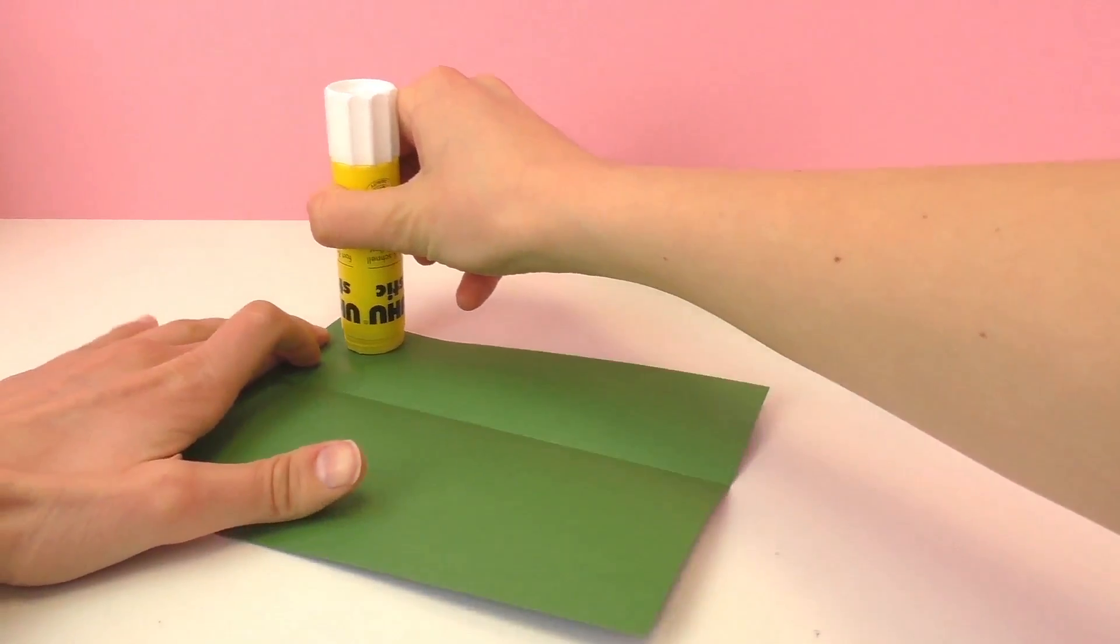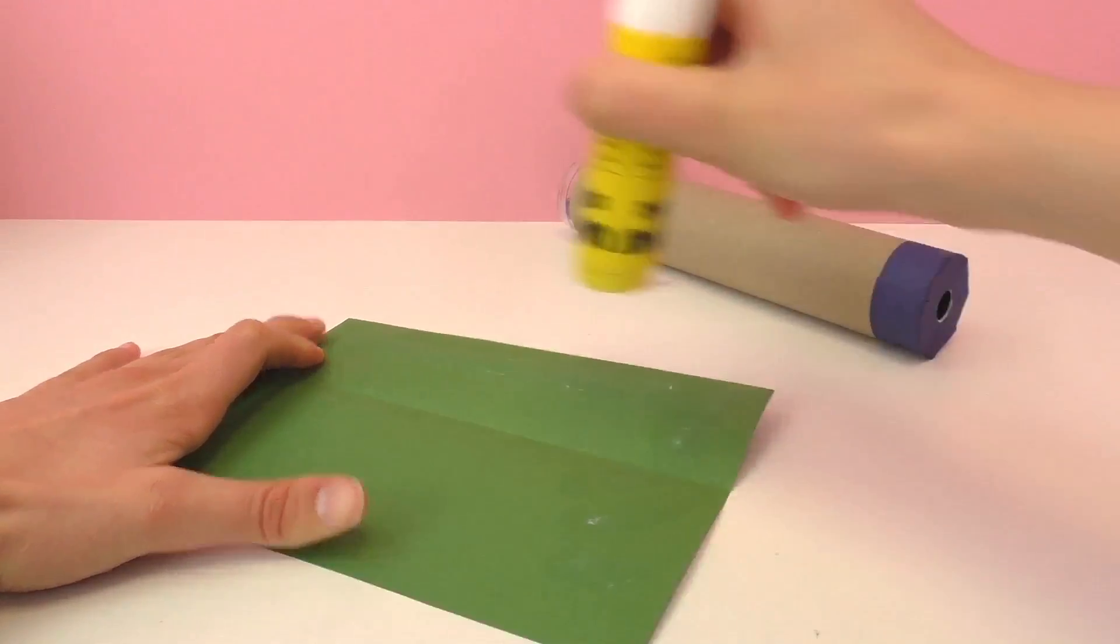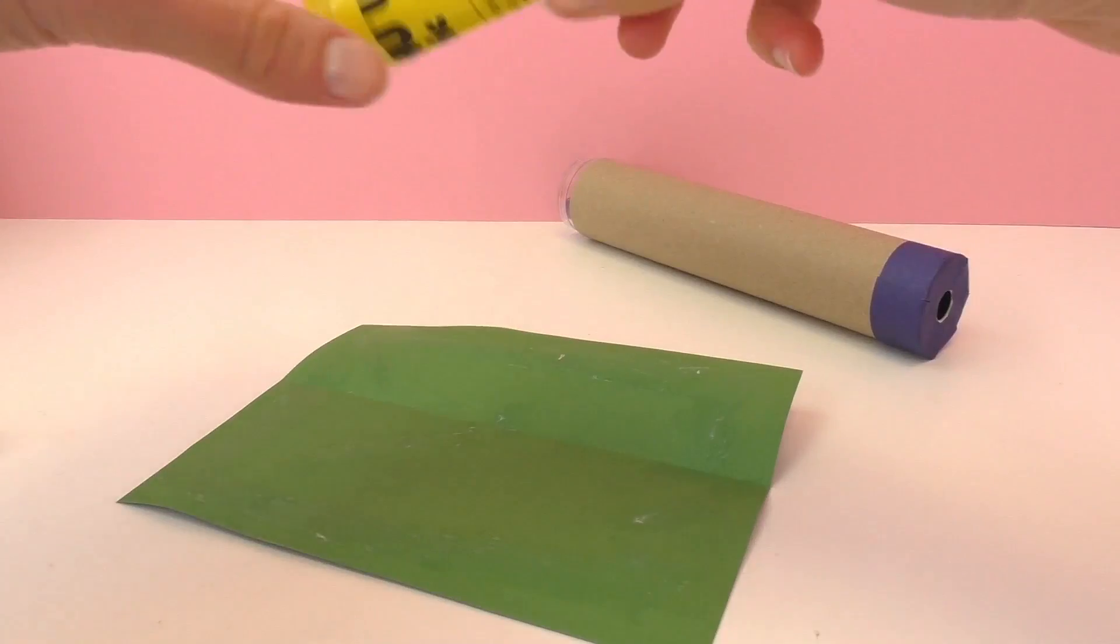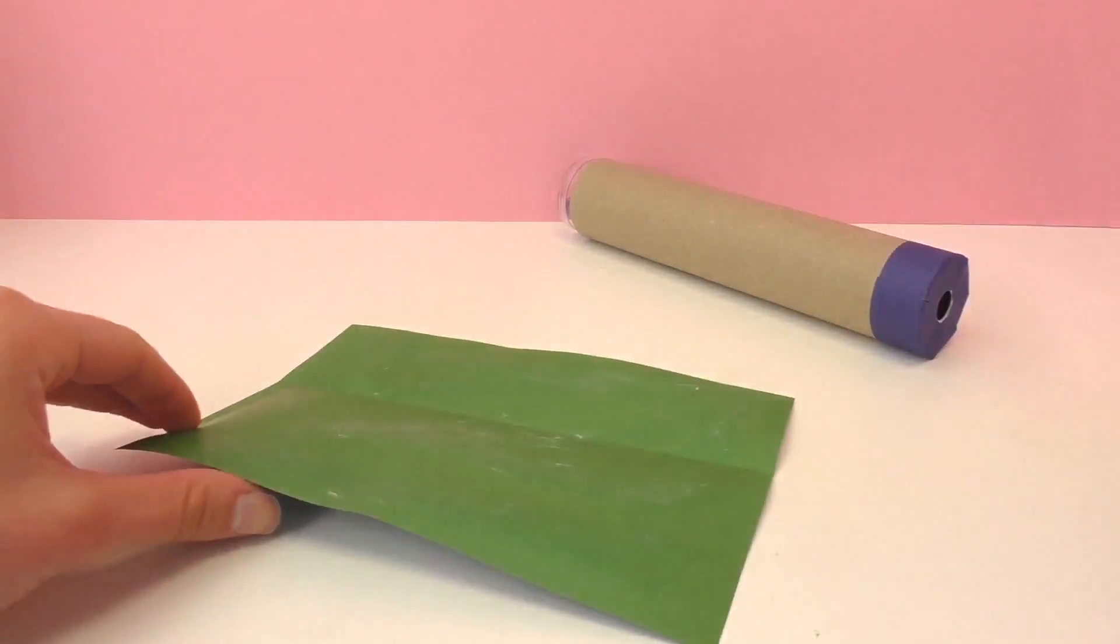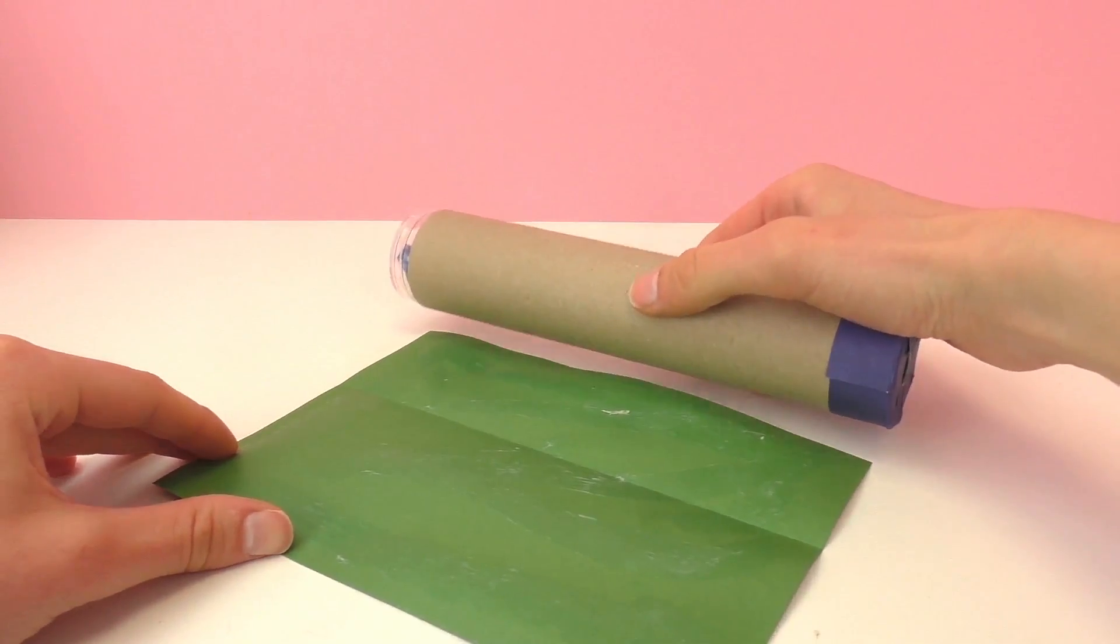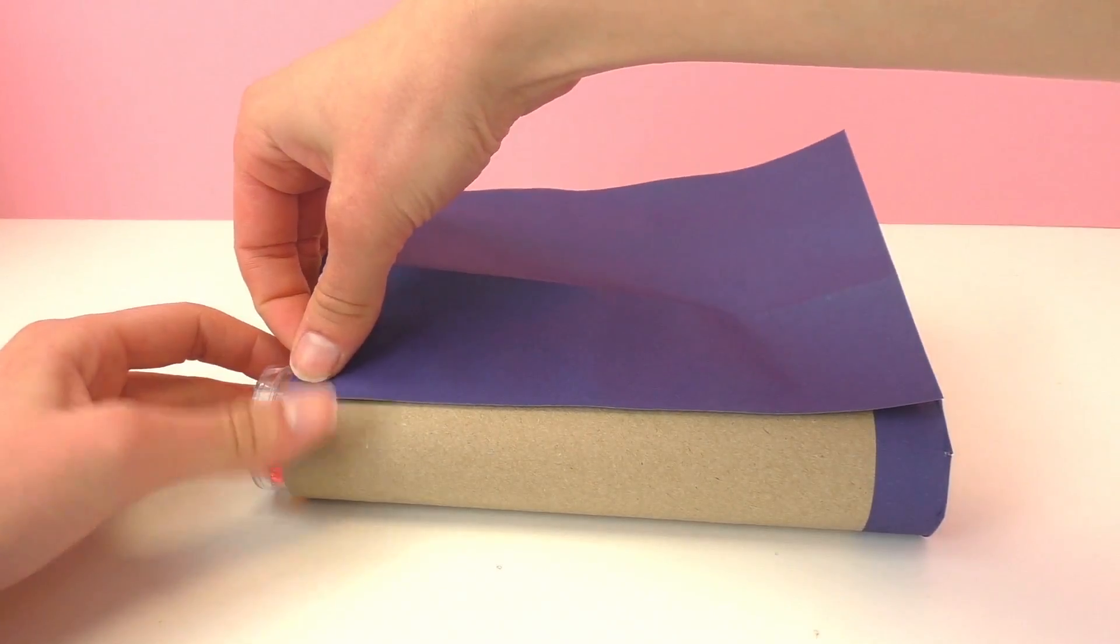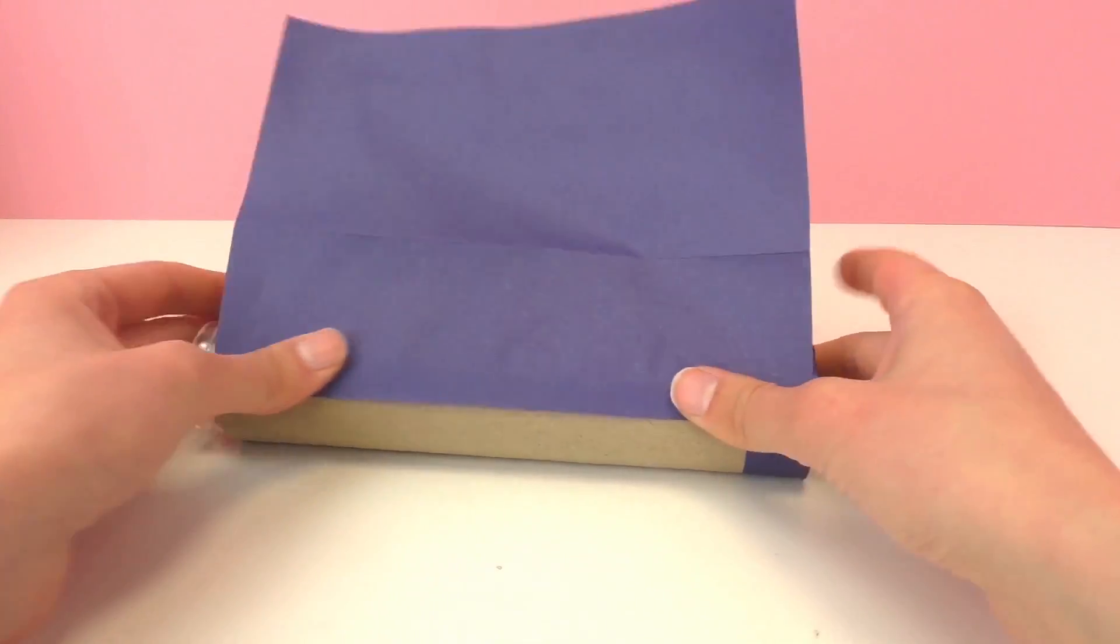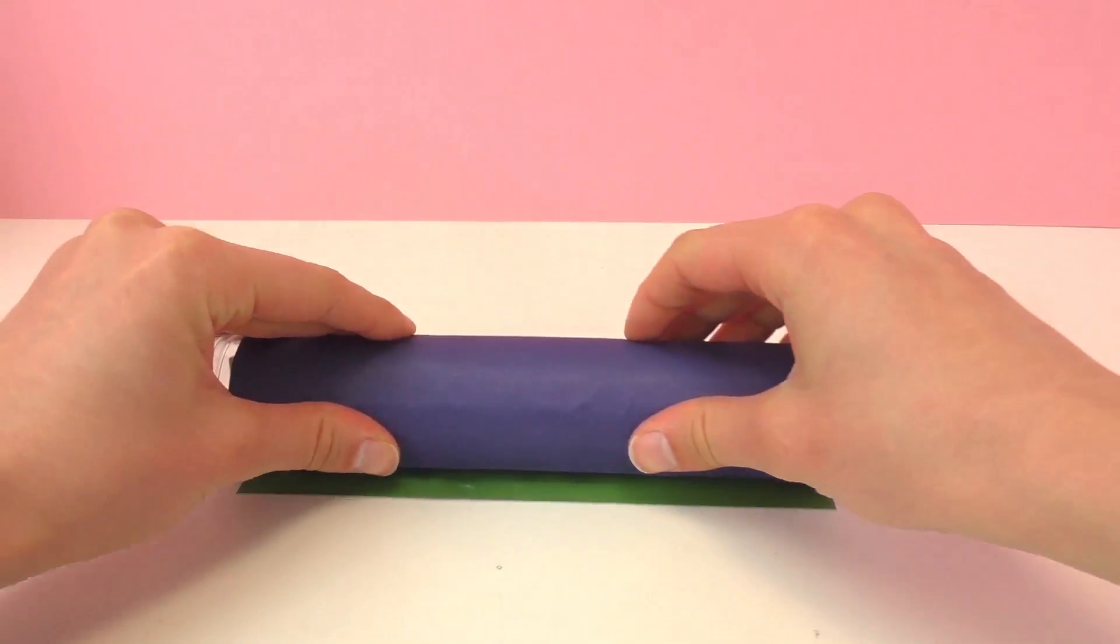Next I'm just going to put glue all over this and then I will roll it around the kaleidoscope. You can do this with any color you like. Just make sure there's enough paper to completely cover the kaleidoscope. If you're doing this project at home without the kit, then you can use a tube and any colored paper you have such as wrapping paper.